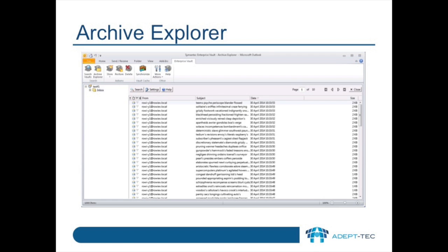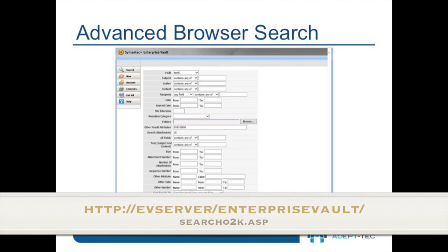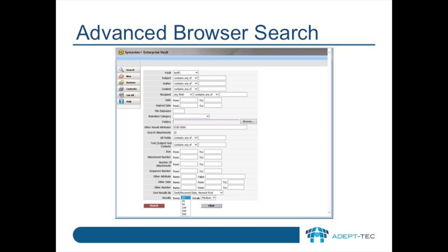You can do quite complicated searching in the lesser known Advanced Browser Search. Advanced Browser Search is very powerful and can be used to query extensively against an archive, and can even be used to return other indexed attributes in the results.